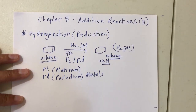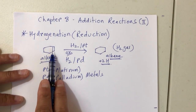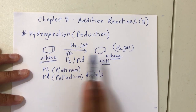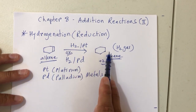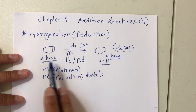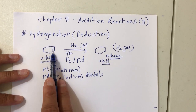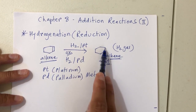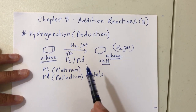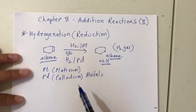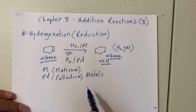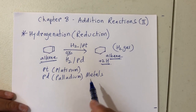To figure it out: you are converting a double bond into a single bond, and the difference is two hydrogens. If you add two hydrogens across the double bond, you get the single bond. That's your first reaction — hydrogenation.